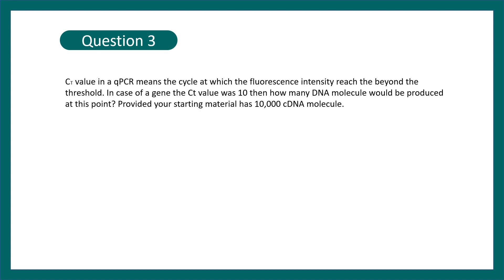Question number three. CT value in a qPCR. qPCR means the cycle at which fluorescent intensity reach beyond the threshold. In case of a gene, the CT value was 10. How many DNA molecules would be produced at this point provided your starting material has 10,000 cDNA molecules? So the question is after 10 cycles, how many molecules would be produced? So generally you can use any exponential equation like this for the PCR: Nt equals N0 into 2 to the power n, where N0 is the starting material and small n is basically the number of PCR cycles.